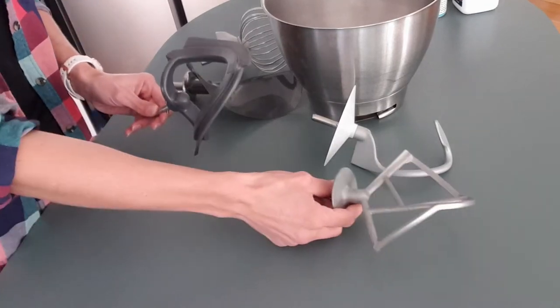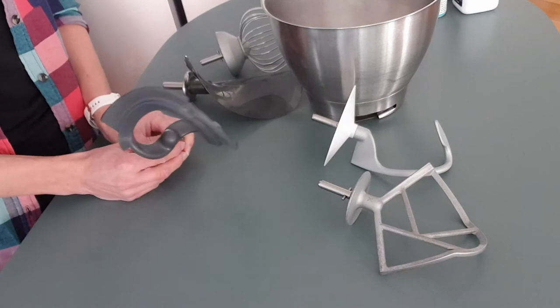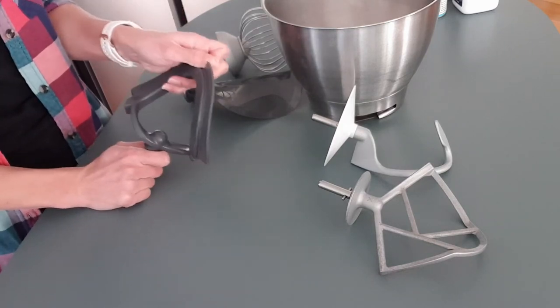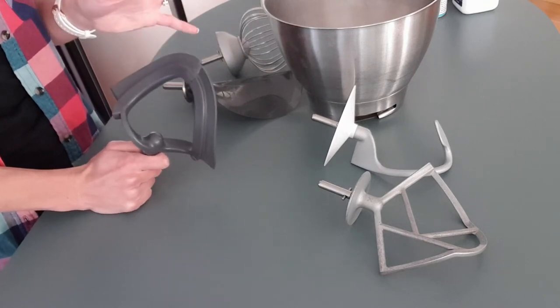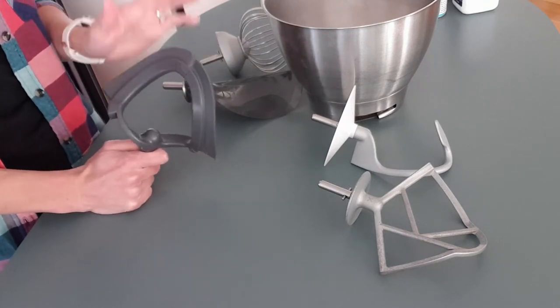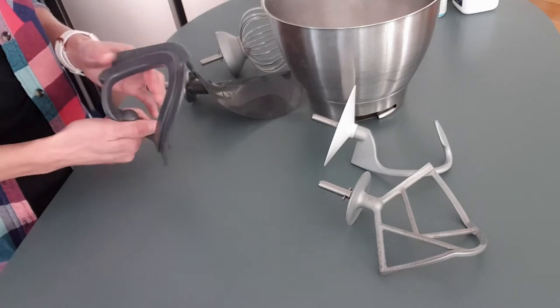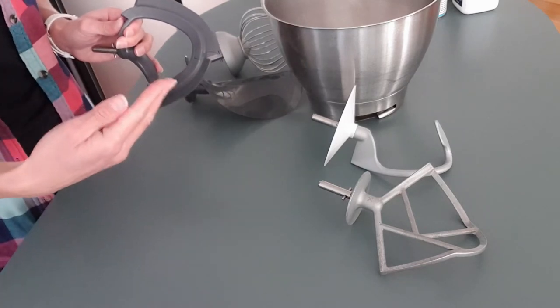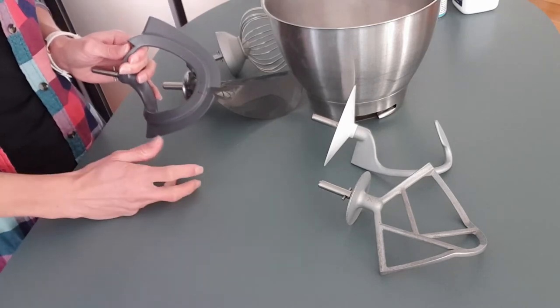This one is the creaming beater. Now my first Kenwood came with this, but my mum's Kenwood from like 30 years ago didn't have this. It's called the creaming beater, and it's fabulous. I love it. It creams together your butter and sugar or your fat and your sugar.